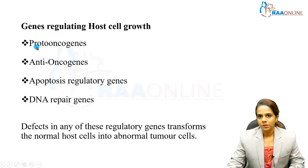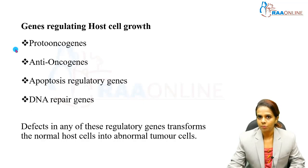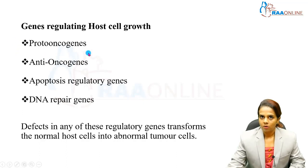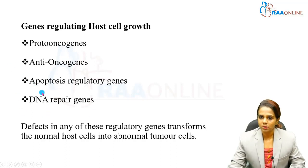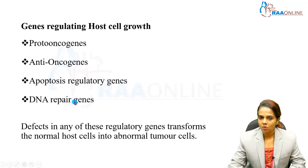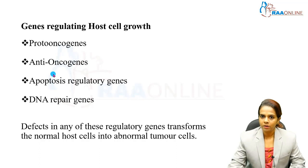There are four important genes responsible for the regulation of cell growth and proliferation: proto-oncogenes, anti-oncogenes (also called tumor suppressor genes), apoptosis regulatory genes, and DNA repair genes. Any defects in any of these regulatory genes transforms normal host cells into abnormal tumor cells.